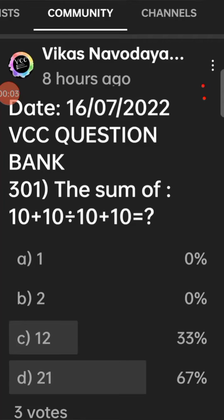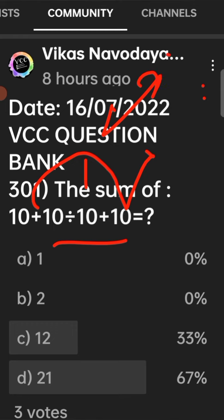VCC question bank 301: the sum of 10 plus 10 divide 10 plus 10. Here divide 10 means 1. So 10 plus 10 equal to 20, 20 plus 1 equal to 21. The answer is D, option D is the right answer.